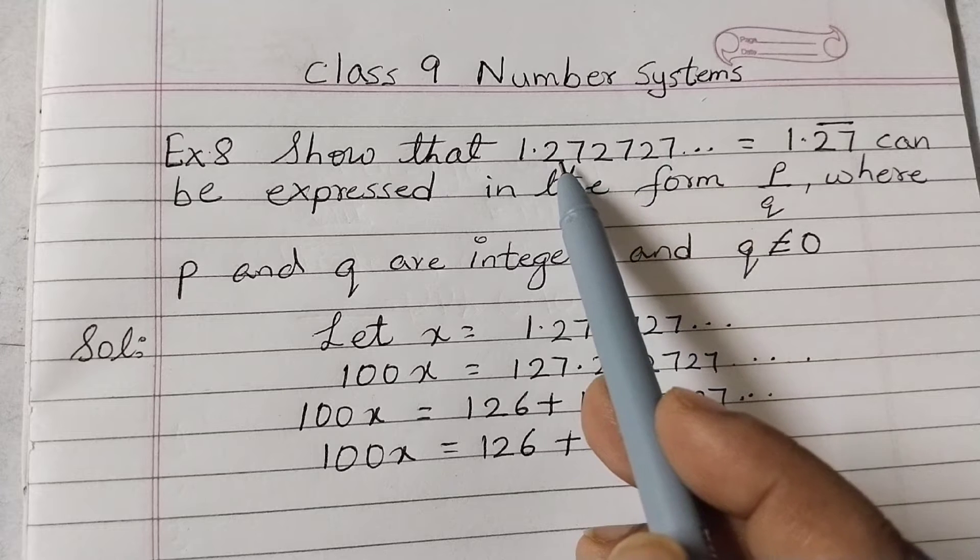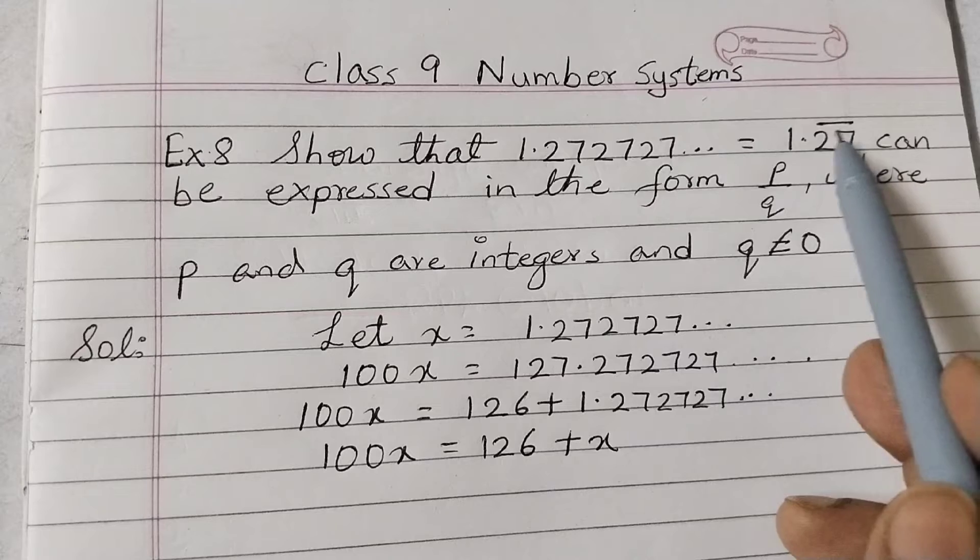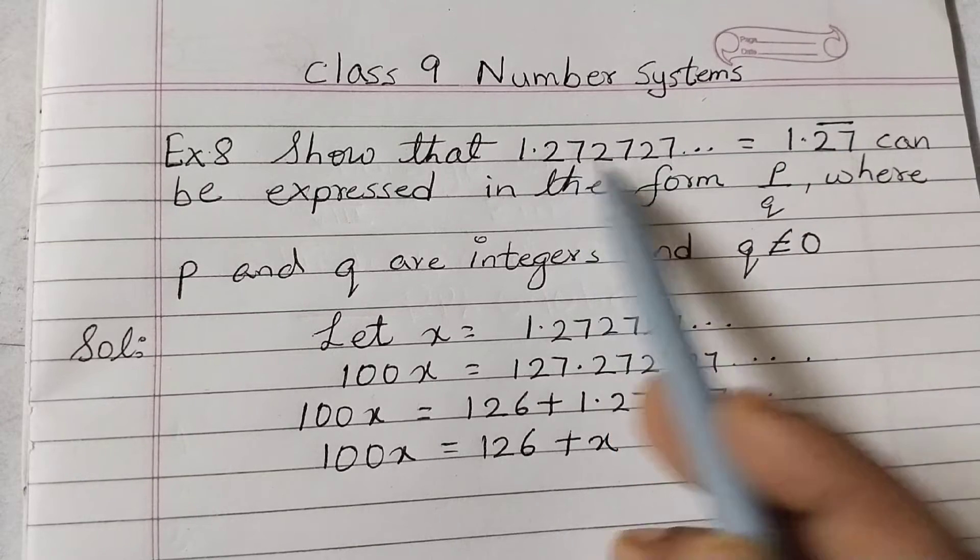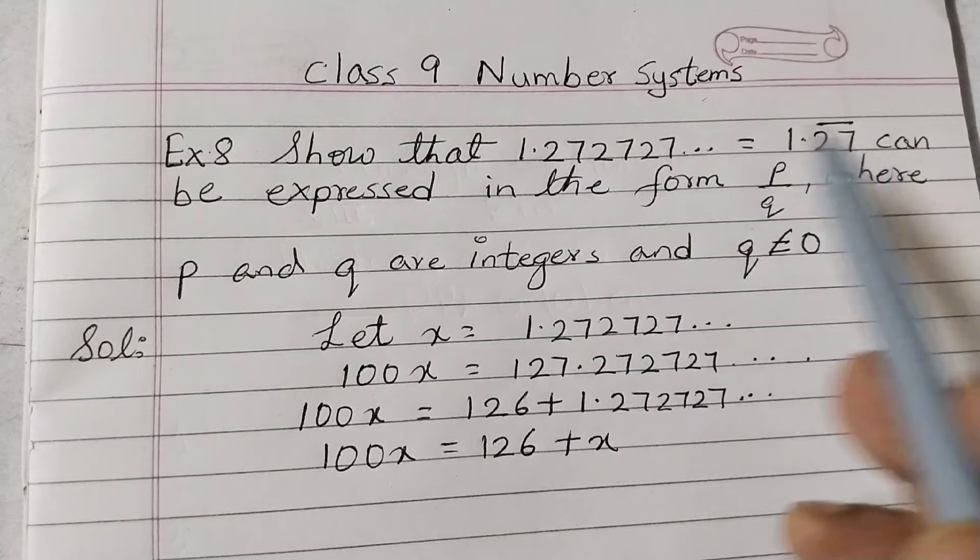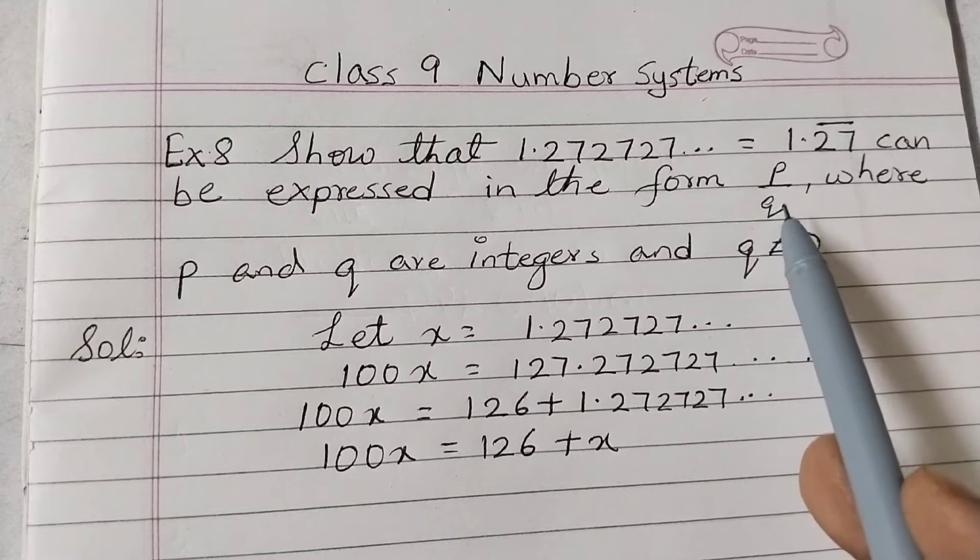Where 2, 7 - this block is repeating itself, so a bar is there on top of 2 and 7 to show that it is repeating. This decimal expansion we need to write as p/q as a rational number.